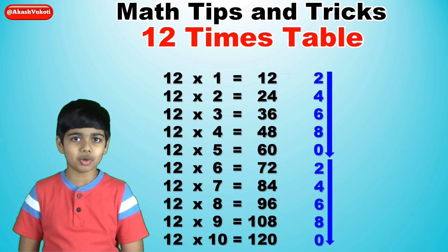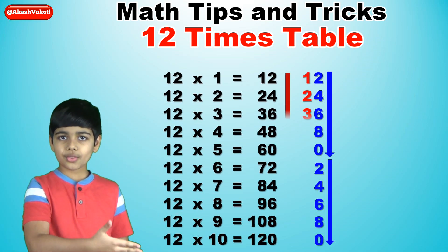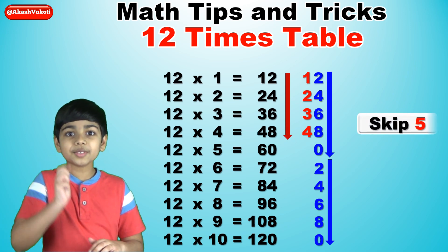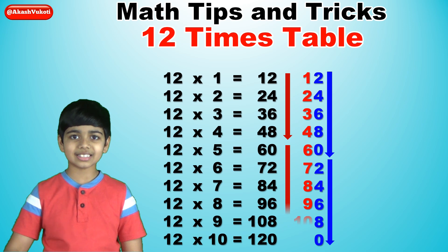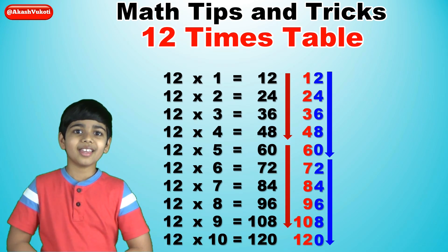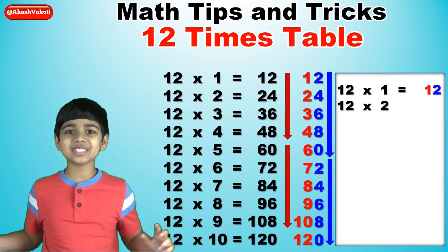Feel free to extend this if you want. But anyway, write 1, 2, 3, 4, skip the 5, 6, 7, 8, 9, 10, skip the 11, 12. And, there we go. We now have the 12 times table.